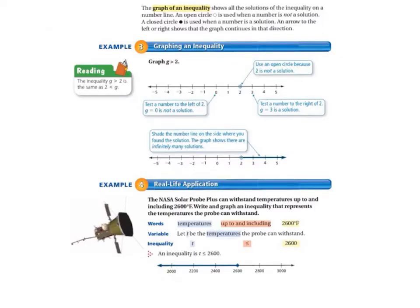The graph of an inequality shows all the solutions of the inequality on a number line. An open circle is used when a number is not a solution. A closed circle is used when a number is a solution. An arrow to the left or right shows that the graph continues in that direction.